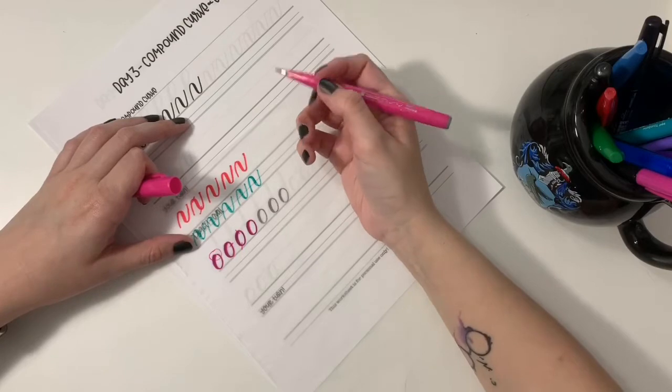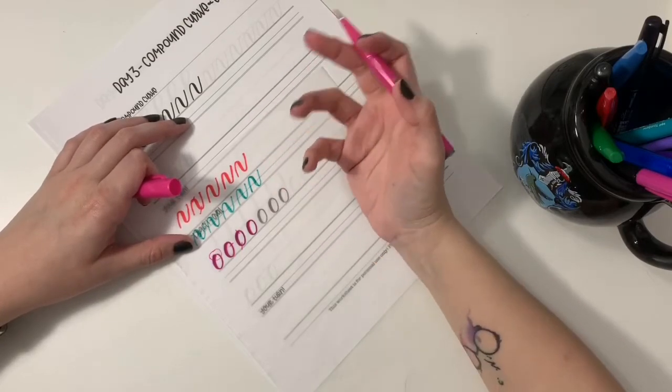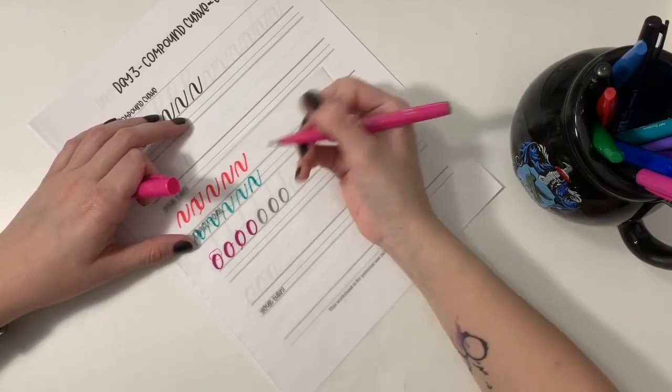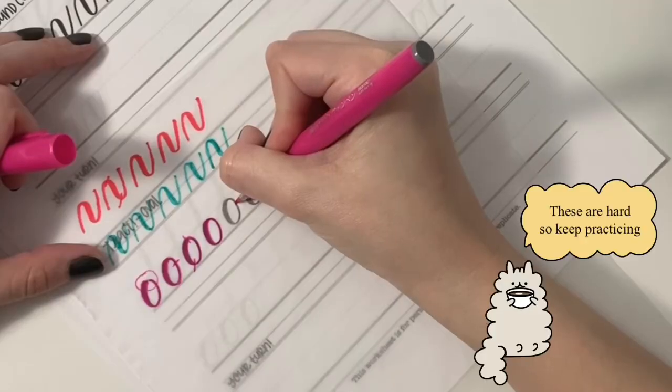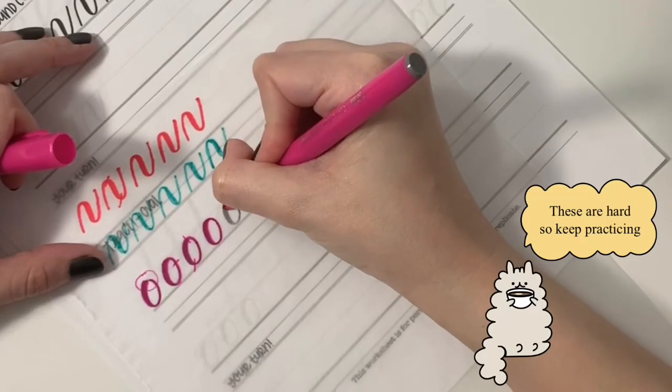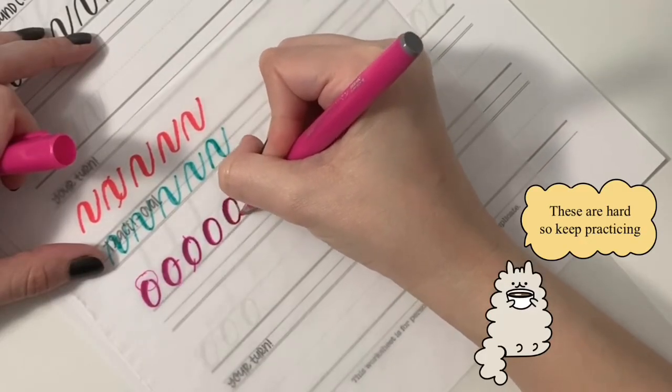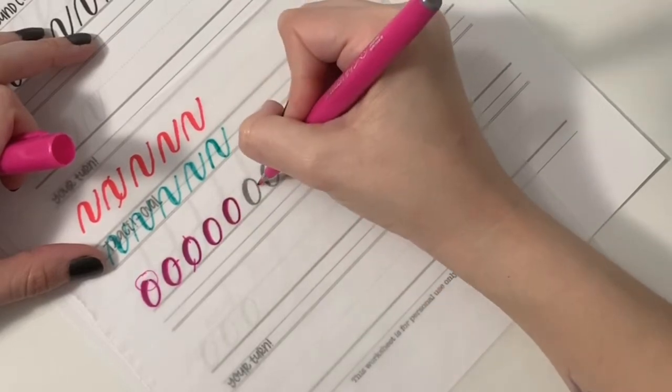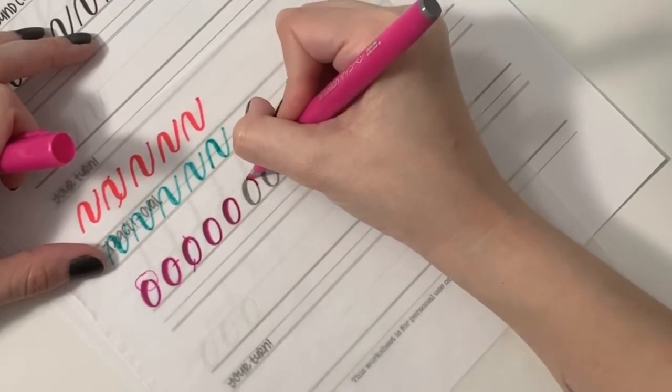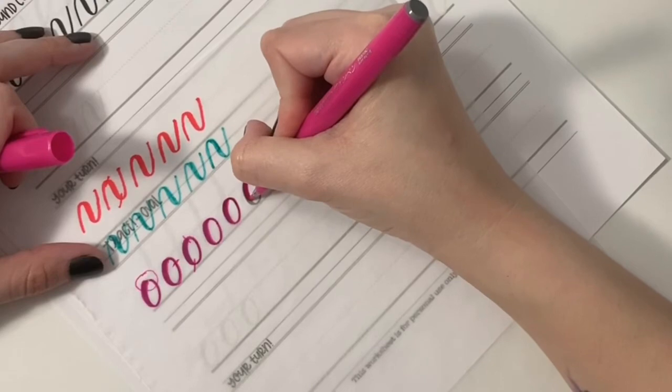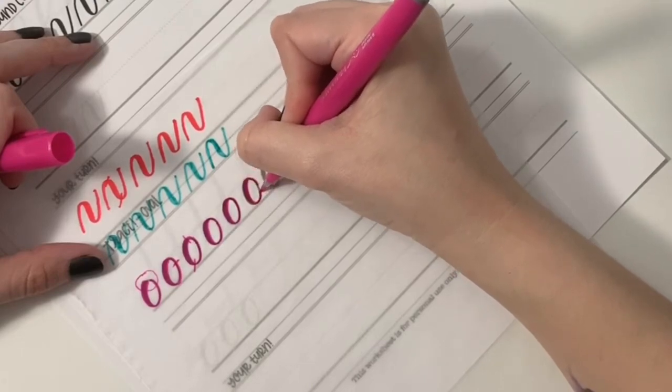If it makes you feel more comfortable, you can do a lot of tracing of the ovals before you take on doing them freehand. So thin up, thick down, thin up.